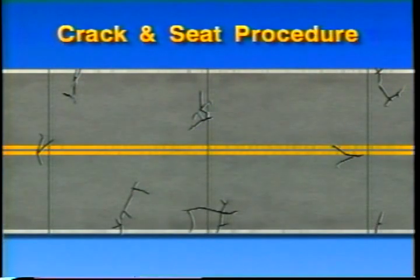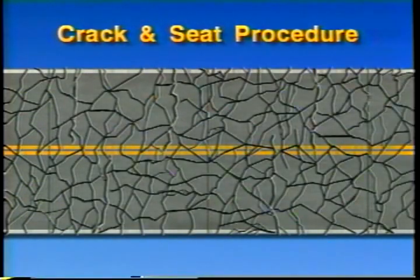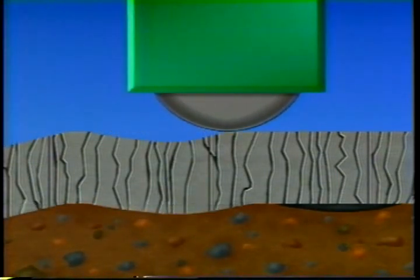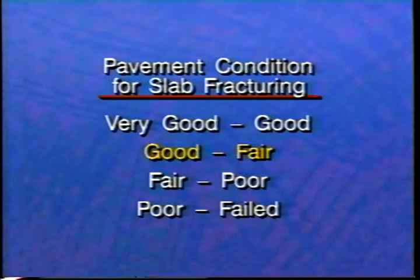Slab fracturing creates concrete pieces small enough to significantly reduce the stresses that contribute to reflective cracking, but the pieces are still large enough to retain some of the original concrete strength and maintain aggregate interlock between the pieces. Seating of the fractured slab re-establishes uniform sub-base support, reducing vertical movement in the slab pieces. Concrete pavements considered for slab fracturing are normally in fair-to-poor or poor-to-fail condition, though pavements in good-to-fair condition may be considered given adequate economic justification.